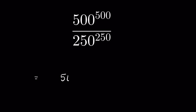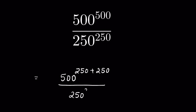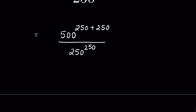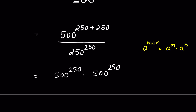So 500 to the power 500, we can write as 500 to the power 250 plus 250, then upon 250 to the power 250. There is an identity: a raised to the power m plus n is equal to a raised to the power m times a raised to the power n. So this will be 500 to the power 250 times 500 to the power 250, upon 250 raised to the power 250.